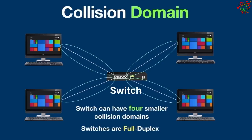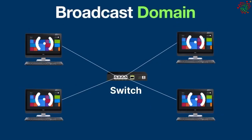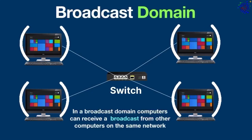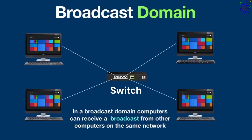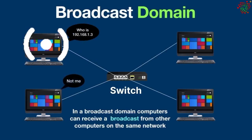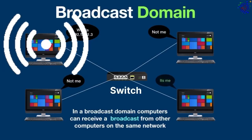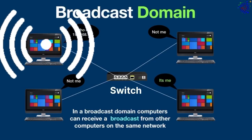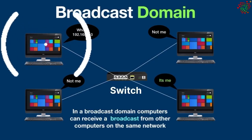Now let's talk about broadcast domain. In a broadcast domain, computers can receive a broadcast from other computers on the same network. Basically, broadcast is when a computer wants to talk to another computer on the network — first it sends a broadcast and all computers on the same network will receive it. The main reason for this is to locate the particular computer it wants to communicate with, whether the computers are connected to a hub or a switch.